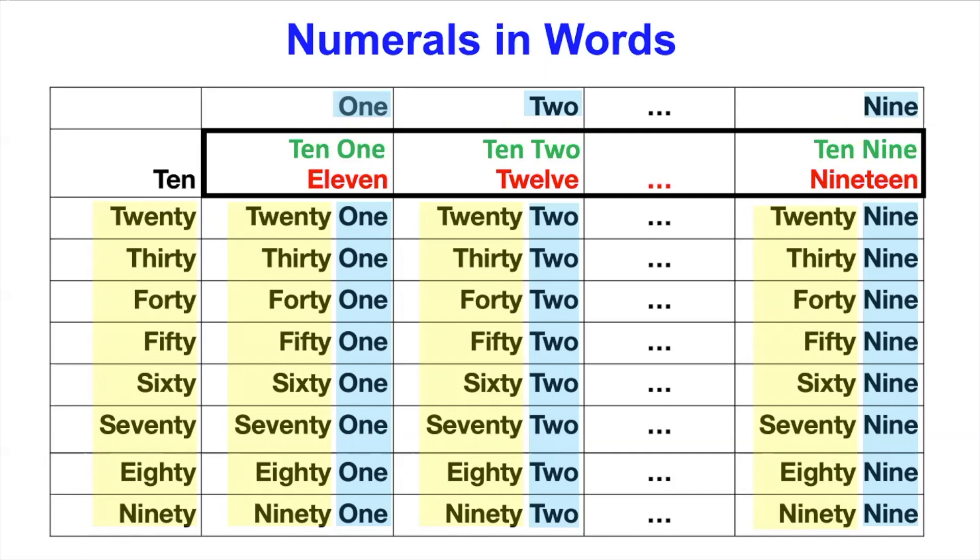One remedy is to teach our kids the regular words first like the Chinese words. After they conceptualize these words, teach English words as nickname. The nickname for 10-1 is 11, the nickname for 10-2 is 12, and so forth, until the nickname for 10-9 is 19. The regular words reveal the base 10 structure and recurring pattern. The nicknames would fit in daily life.